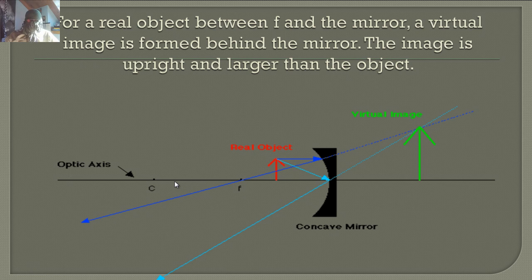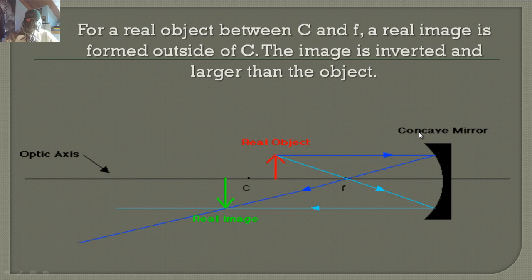Here's a cheat sheet for concave mirrors. For a real object between F and the mirror: a virtual image forms behind the mirror — upright and larger, so magnified. For a real object between C and F: a real image forms outside C — inverted and magnified. For a real object directly on C: a real image forms at C — same size but inverted.